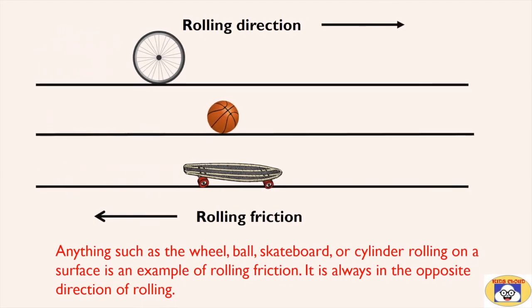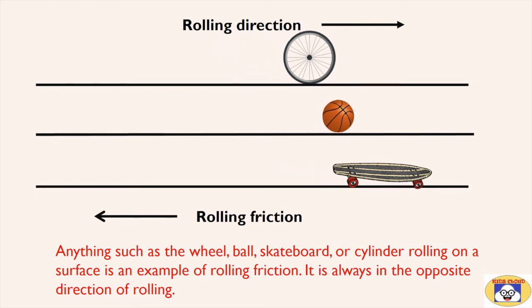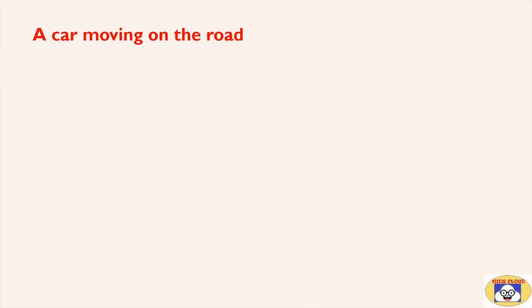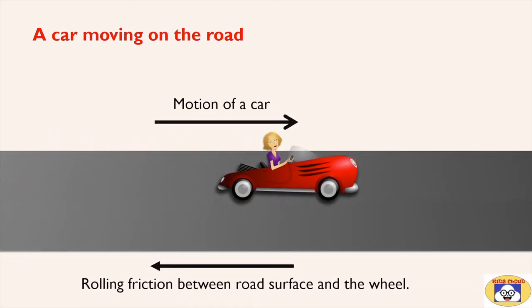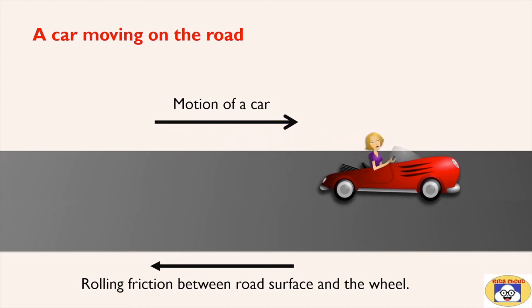Anything such as a wheel, ball, skateboard, or cylinder rolling on a surface is an example of rolling friction. It is always in the opposite direction of rolling. For example, when a car is just allowed to roll, there is friction between the road surface and the wheel, which eventually causes the car to stop.